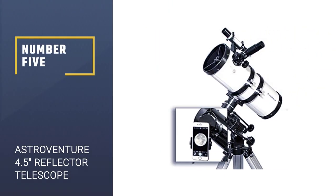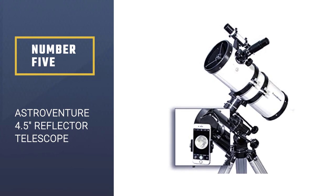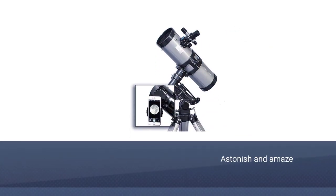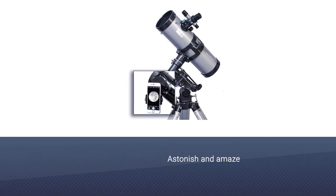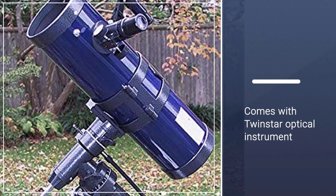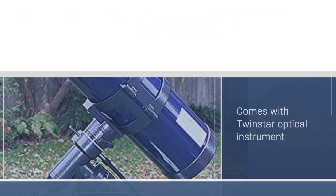Number five: AstroVenture 4.5-inch Reflector Telescope. This product from Twin Star will astonish you with outstanding features that let you view the rings of Saturn, the Moon, and other heavenly bodies. It comes with Twin Star optical instrument which makes the telescope powerful and easy for viewing deep space objects like Orion Nebula, binary star systems, and Beehive star clusters.